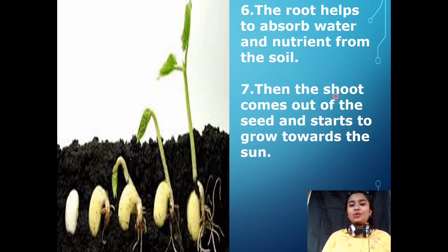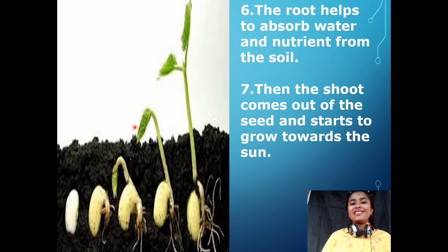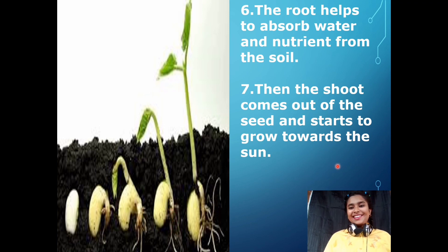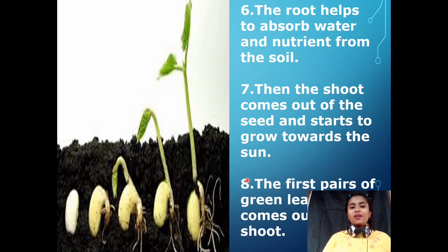Then the shoot comes out of the seed and starts to grow towards the sun. You can see the shoot growing above the soil and facing the sun in the sky, while the root grows downward into the soil. The first pair of leaves — called foliage leaves — comes out from the plant.